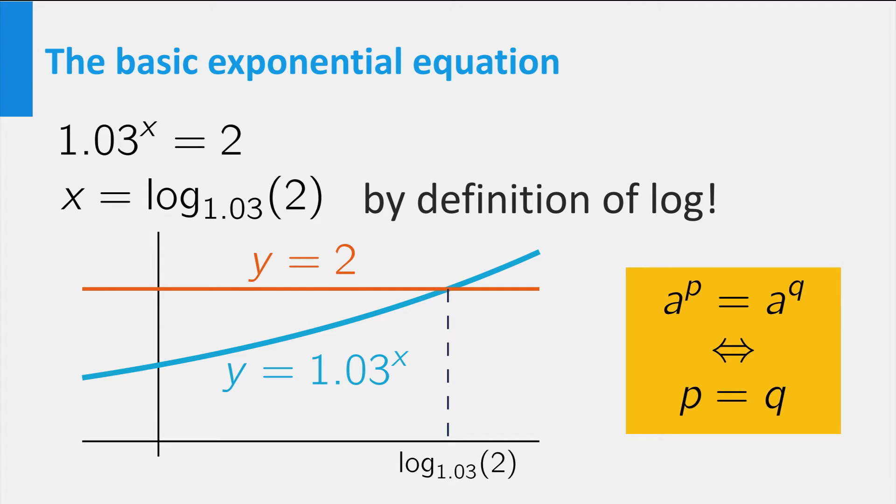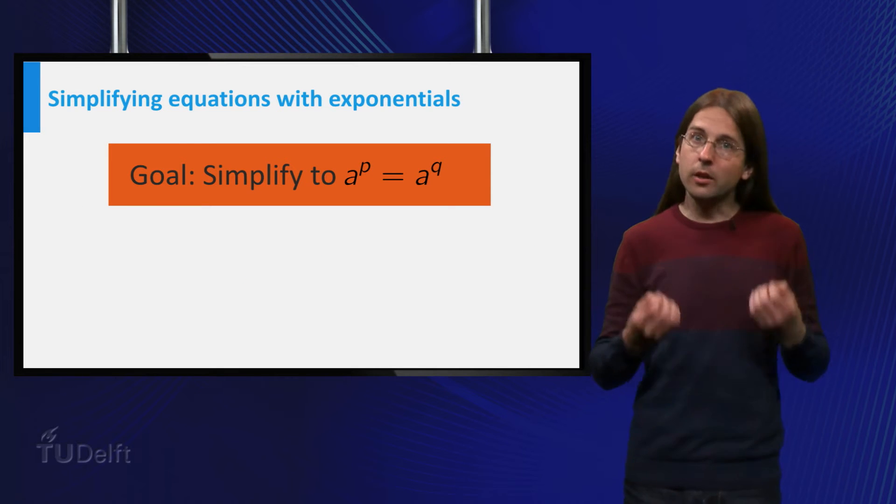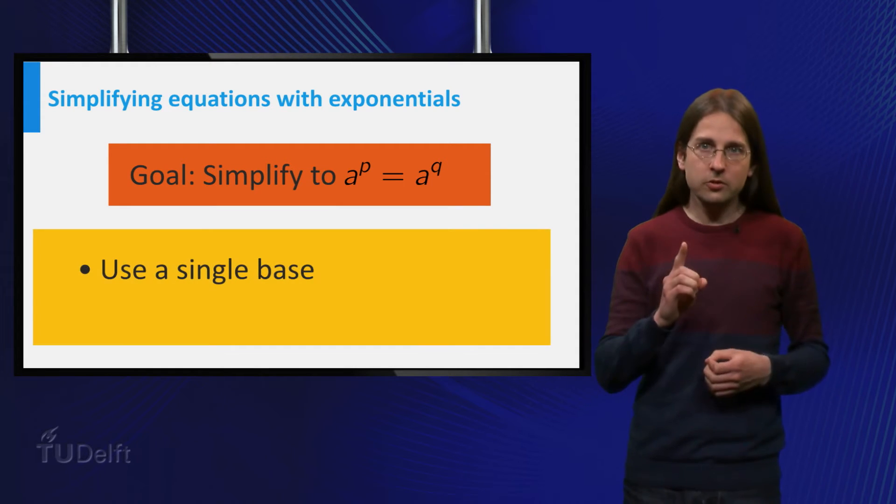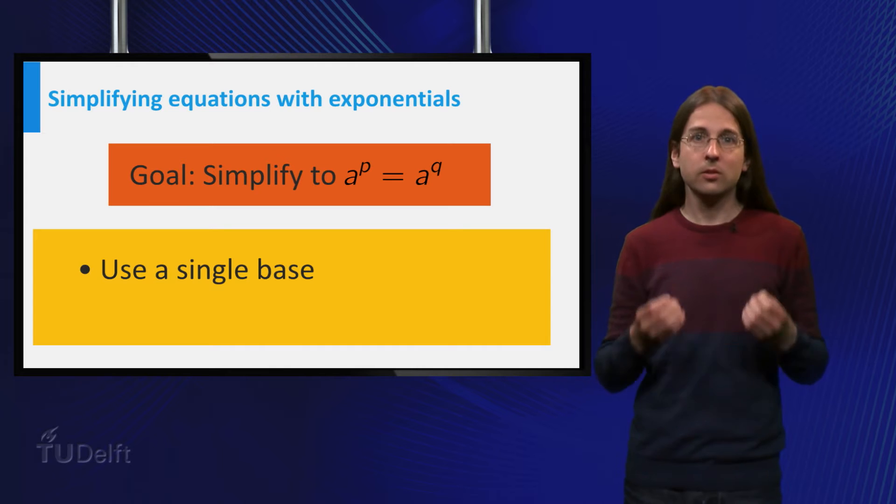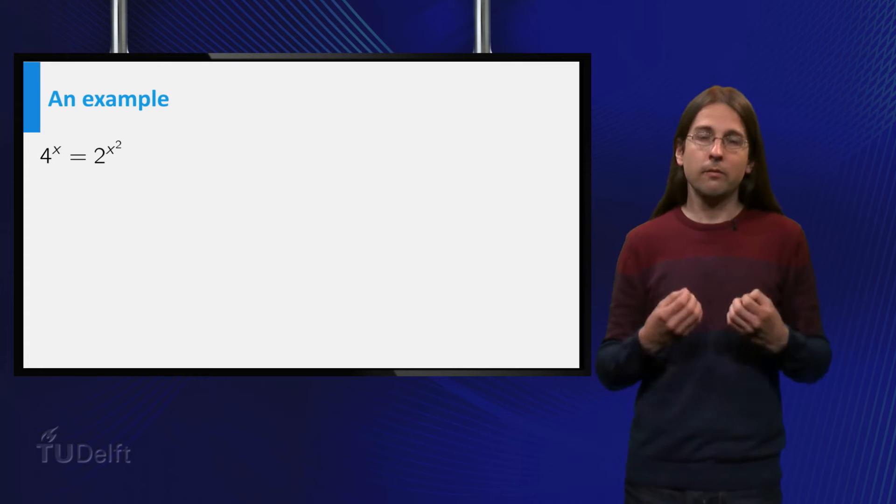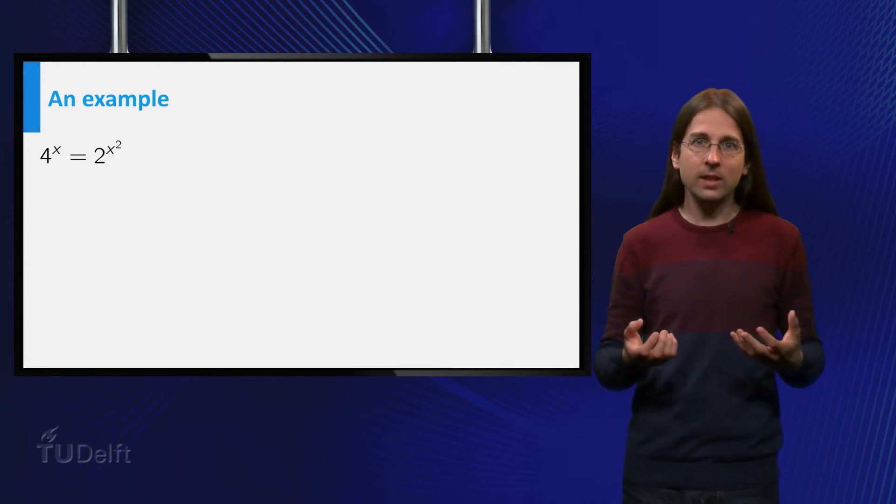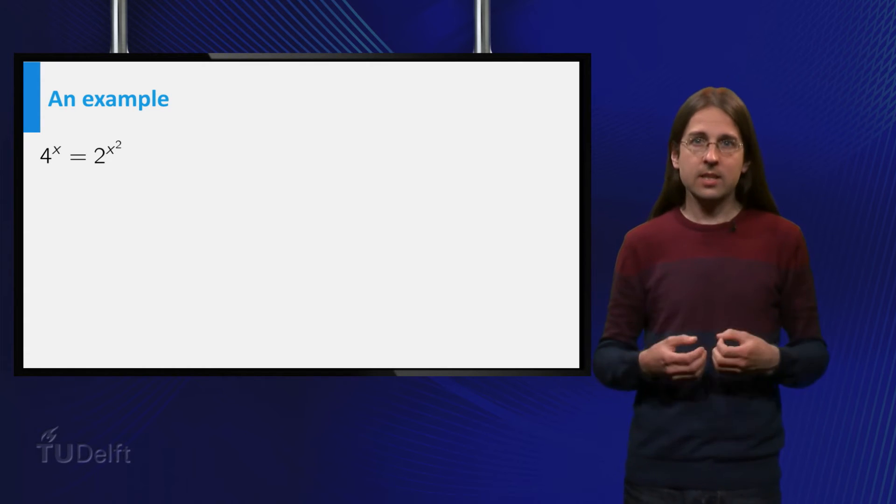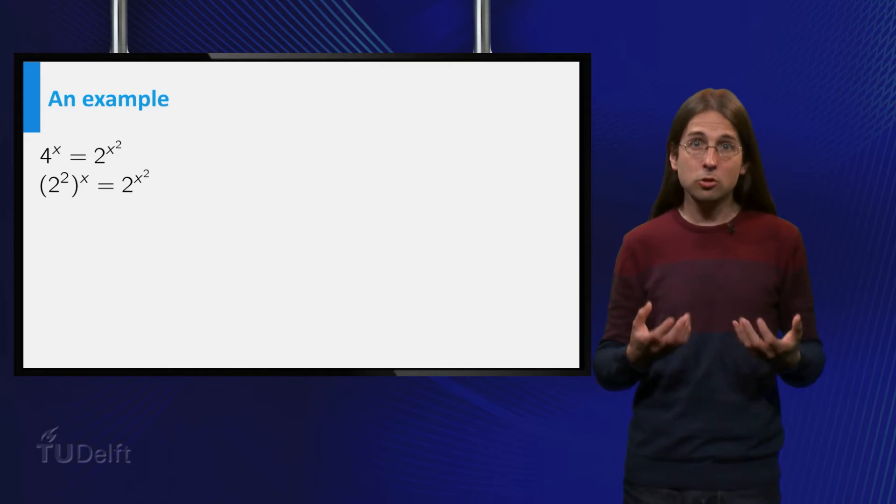To solve more complicated equations involving exponentials, the goal is always to reduce them to a simple equation of the kind a^p = a^q, implying p = q. There are two main techniques that can help you simplify the equation. The first technique is to change everything to a single base. For example, for the equation 4^x = 2^(x²), you can rewrite everything in base 2. In this case we can use that 4 = 2², so 4^x = (2²)^x,